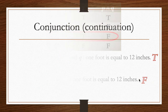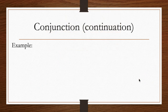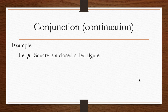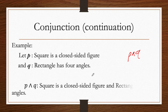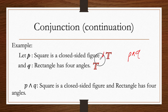One more example: P is 'a square is a closed-sided figure' and Q is 'a rectangle has four angles.' Written as P and Q: 'A square is a closed-sided figure and a rectangle has four angles.' Since P is true and Q is true, the conjunction is also true.